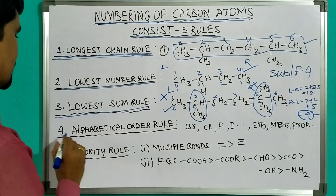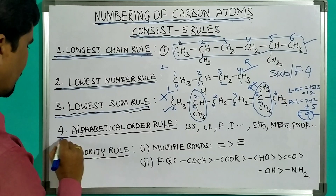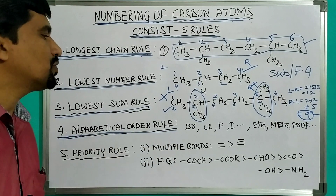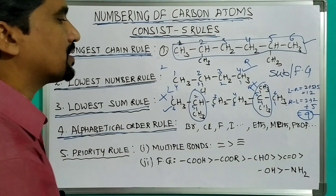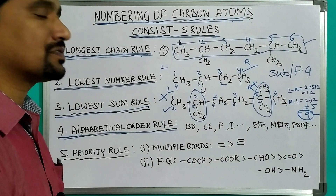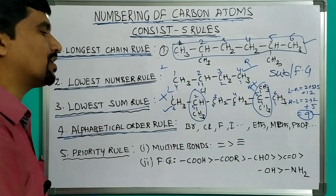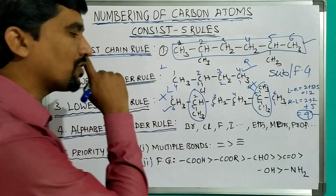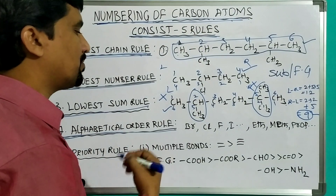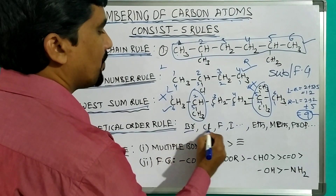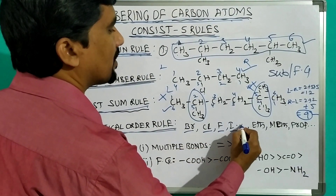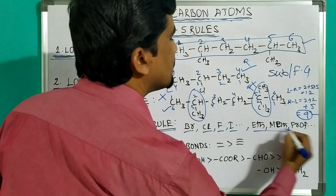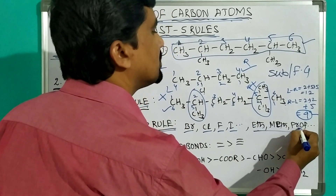The fourth rule is the alphabetical order rule. Suppose two or more functional groups or two or more substituents are there, we must follow the alphabetical order. For example, if substituents chlorine, fluorine, bromine, and iodine are there, we must write bromine, chlorine, fluorine, iodine in alphabetical order. Similarly, in alkyl groups, we follow alphabetical order.